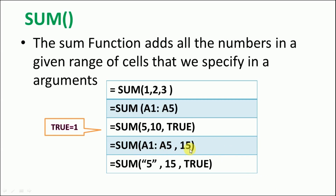Next is =SUM("5",15,TRUE). Here "5" is a text value written in double quotes, and TRUE is also a text value that gets converted to 1. So "5" is converted to numeric 5, giving 5+15+1 = 21. Let's now see how these work on an actual MS Excel sheet.